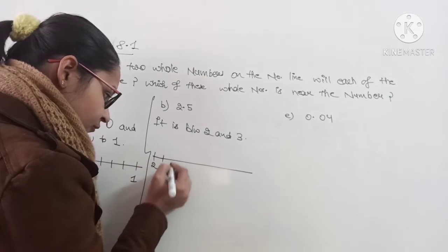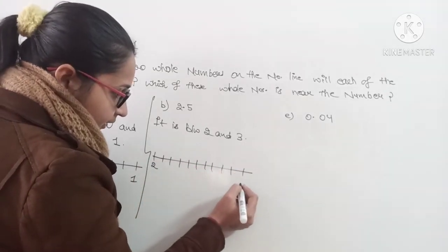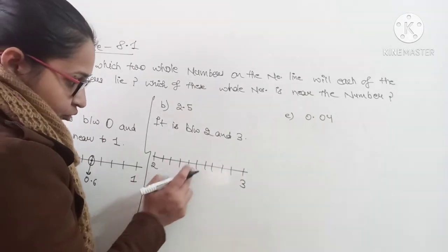2.5 is here. Start at 2, then 1, 2, 3, 4, 5, 6, 7, 8, 9, and then 3. Now 2.5 is 1, 2, 3, 4, 5.